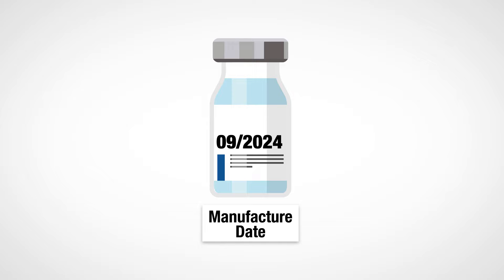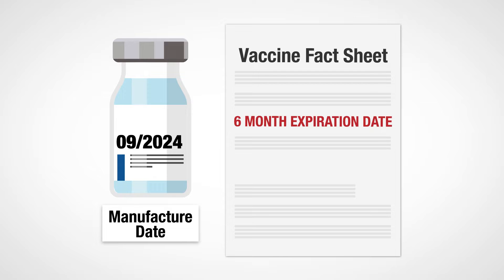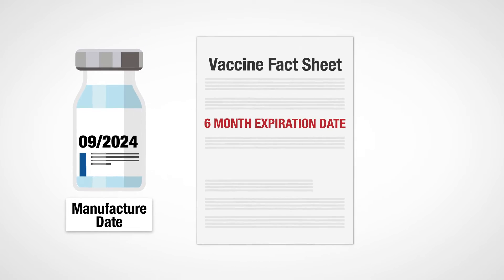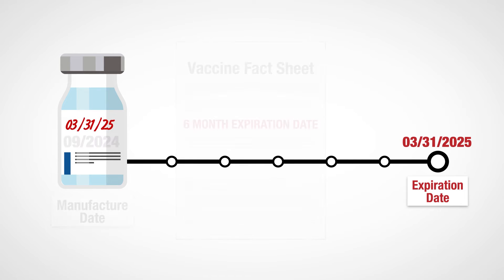On rare occasions, the manufacturer date may be printed instead of the expiration date. Check the vaccine package insert or fact sheet on how to calculate the expiration date based on the manufacturer date, and label the vial with the calculated date.